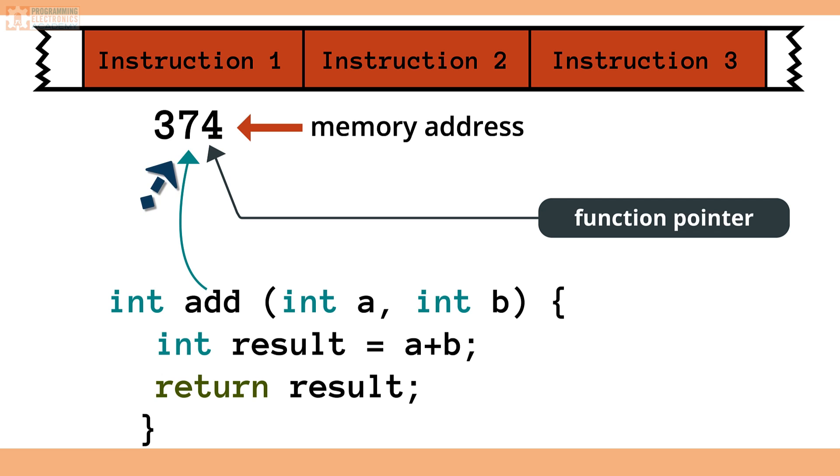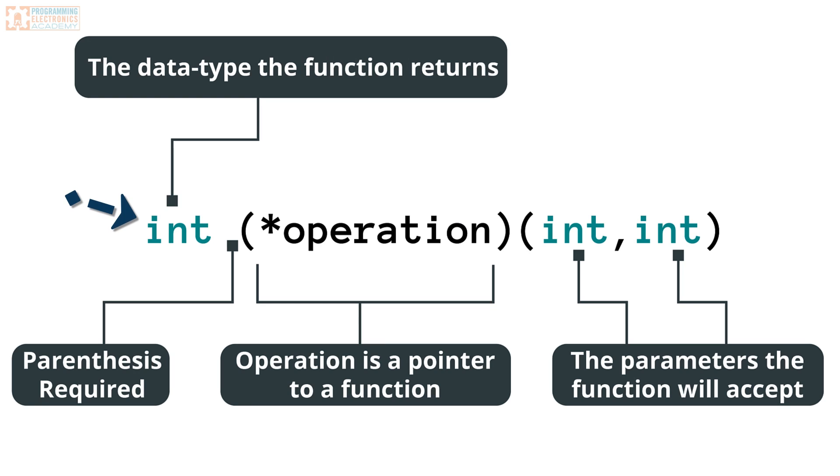So how do we create a function pointer? Well, here's an example of what it looks like. A little bit complex. It might feel like you're looking at the whiteboard at some NASA research and development laboratory, but this is how it works. The first thing we need to specify is the data type that the function will be returning. So think about any time you create a variable, you always have to start with the data type, right? Well, it's no different for a function pointer. We're specifying the data type that this function will return.